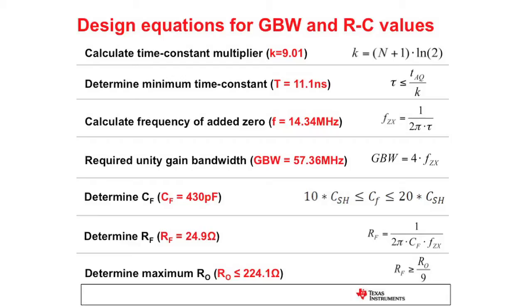After that, we can get our necessary filter values for your capacitor and resistor. When you get your resistor value, you can determine what your maximum output referred impedance is. The filter capacitance is around 430 picofarads, the resistor value is 24.9 ohms, and your resistance value must be less than or equal to 224.1 ohms. Now we have all the necessary values needed.